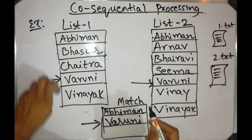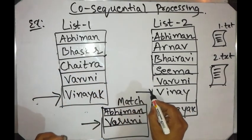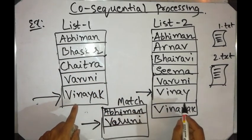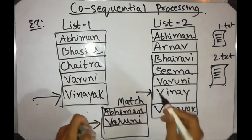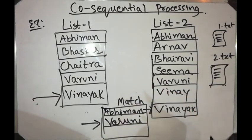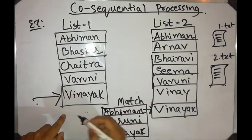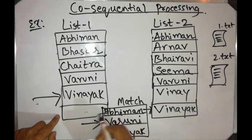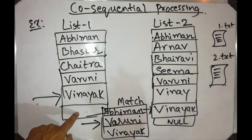When we get a match, we advance one step ahead in both lists. We continue comparing — when we find the next match, we write it to the match list. Say for example this list has one more name remaining.